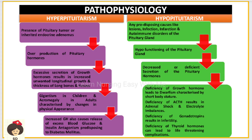If growth hormone is deficient, the person will develop dwarfism — a very short body. If ACTH (adrenocorticotropic hormone) is deficient, the person will develop adrenal shock and electrolyte imbalances. Deficiency in gonadotrophins results in infertility because the ovum and sperm will not mature. Deficiency in thyroid hormones can result in life-threatening complications.